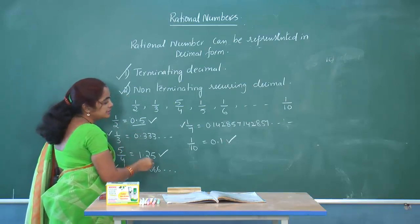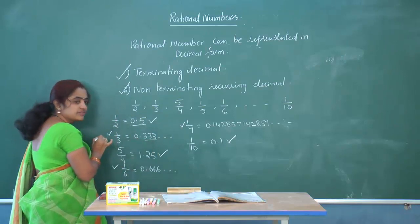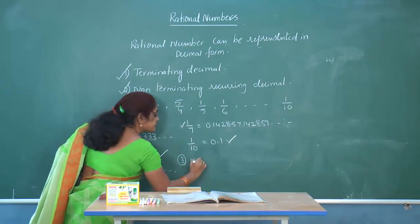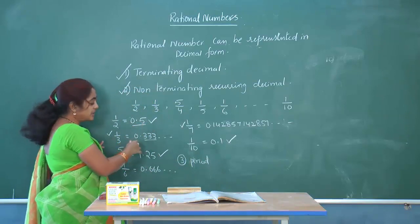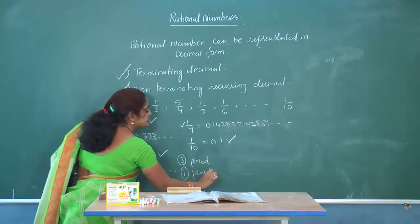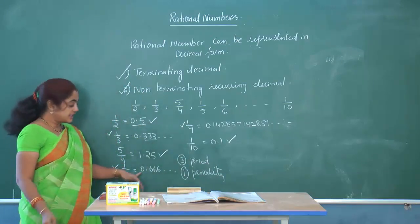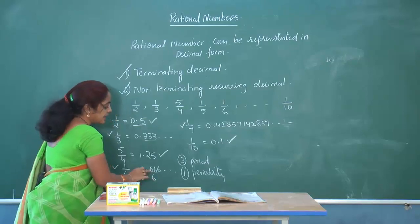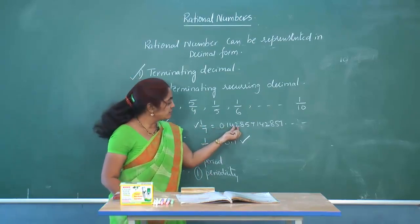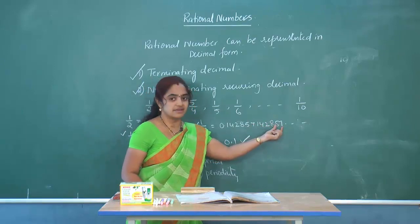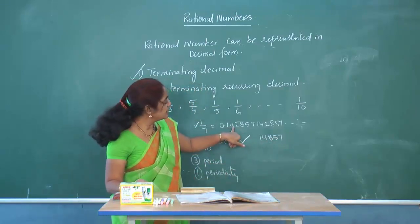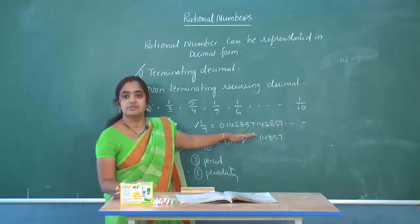In a non-terminating recurring decimal, the number which is repeating is called the period. For 1/3, the digit 3 is repeating, so 3 is the period, and since only 1 digit repeats, the periodicity is 1. For 1/6, the digit 6 is the period with periodicity 1. For 1/7, the digits 142857 form the period, and since 6 digits repeat, the periodicity is 6.